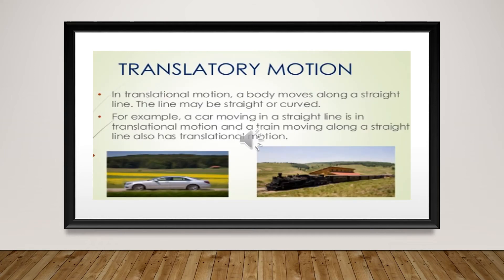Let's begin with translatory motion, which we also call linear motion. In this type of motion the body moves in a straight line or a curved path, and every particle in the body is displaced by the same amount. The motion of a car on a flat road, the motion of a motorbike on a circular road, and the motion of a cricket ball hit for a sixer are all examples of translatory motion.